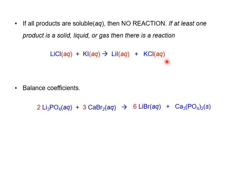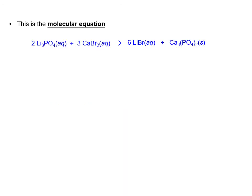The last step is to balance coefficients. For example, we have two phosphates, so I put a 2 in front to balance the phosphates — that gives us six lithiums, so I put a 6 here. Then three calciums, so I put a 3 here to balance the calcium. This equation is now balanced, and this is our molecular equation.